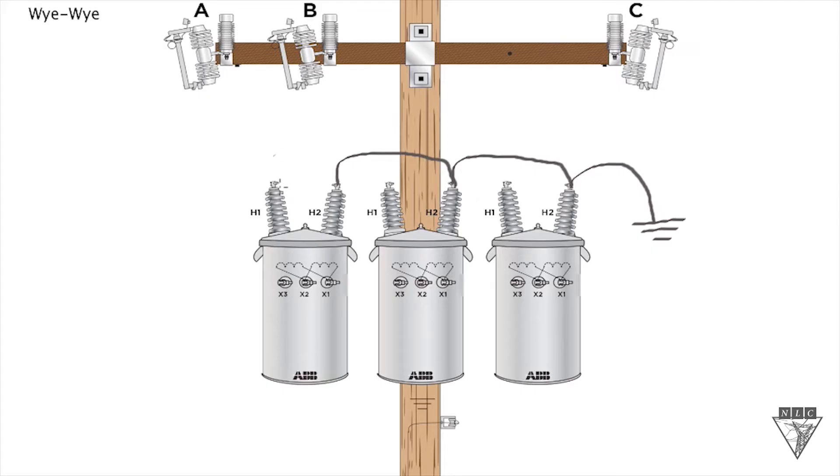Now the second part of this is you just simply run each H1 bushing and run a wire up to each phase. So we'll go to A phase there, center one will take to B phase, and this far right one will take over to C phase. And this is the connection on the primary side of a YY.